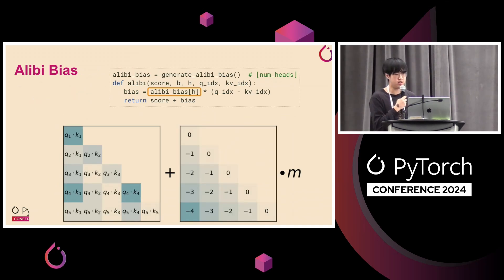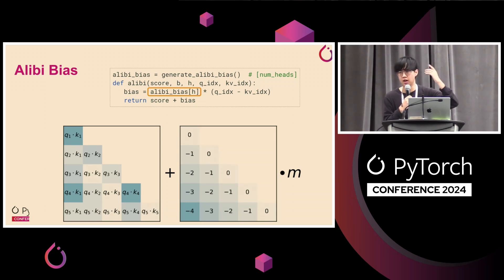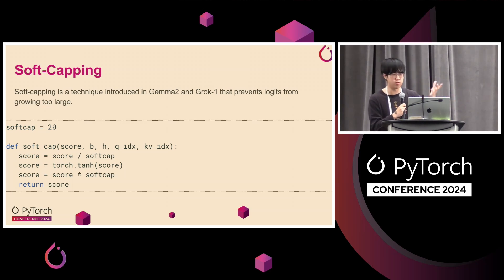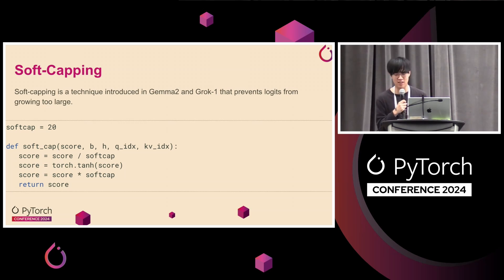For a simple variant like alibi, where you want a positional encoding multiplied by a head-dependent scalar, this shows off one interesting facet of Flex Attention: you can load from external tensors that weren't explicitly passed in to your input. Another recently popular variant is soft capping, used in Gemma 2 and Grok 1, which prevents your logits from growing too large by applying a tanh and division. This is super simple to implement with Flex Attention, whereas without it you'd need to modify CUDA, Cutlass, and so on — a much more involved process.